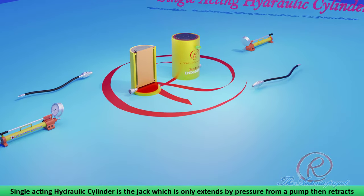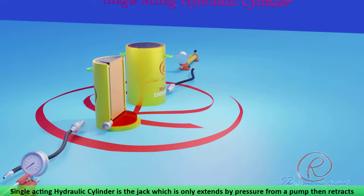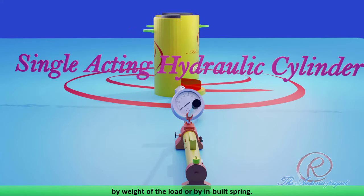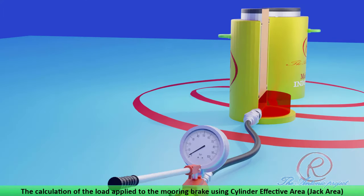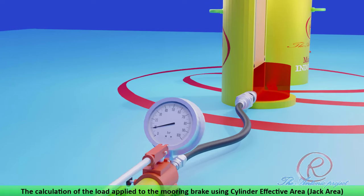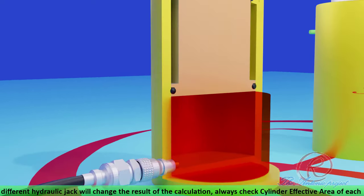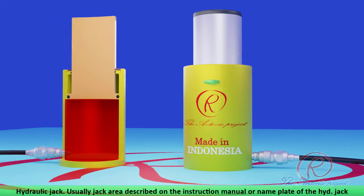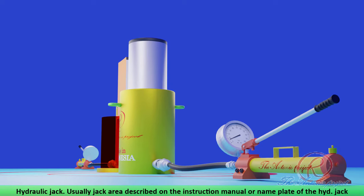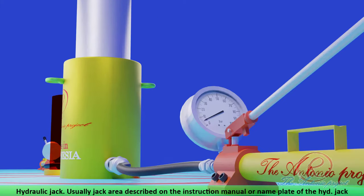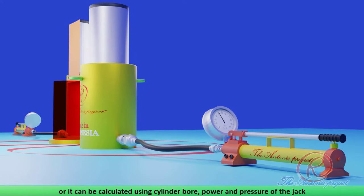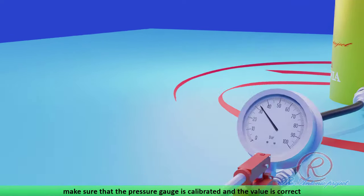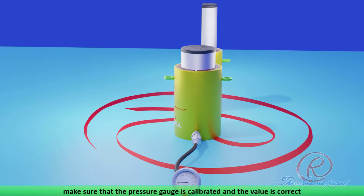A single-acting hydraulic cylinder is a jack which is only extended by pressure from a pump, then retracted by the weight of the load or by a built-in spring. The calculation of load applied to the mooring brake uses the cylinder effective area, or jack area. Different hydraulic jacks will change the result of the calculation, so always check the cylinder effective area of each hydraulic jack. Usually the jack area is described on the instruction manual or nameplate of the hydraulic jack, or it can be calculated using the cylinder bore. Make sure that the pressure gauge is calibrated and the value is correct.